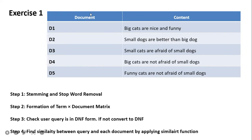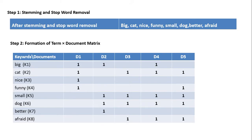For these documents, we apply stopword removal and stemming. After stopword removal, words like 'are,' 'and,' 'they' — all unnecessary or stop words — are removed. For stemming, for example, 'cats' and 'cat' share the same base word 'cat,' so stemming is applied. After stemming and stopword removal, the final keywords are: big, cat, nice, funny, small, dog, better, and afraid.